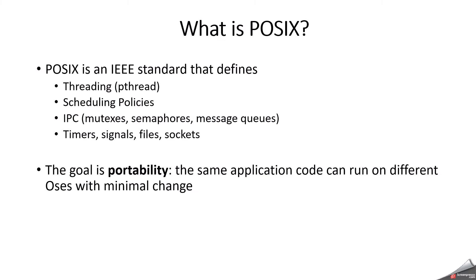POSIX is a UNIX-like operating system such as QNX or Linux that provides a standard POSIX API, and is used for high-performance ECUs like ADAS and infotainment. Autosar Adaptive applications run on top of such POSIX operating systems, while Classic Autosar uses an OSEK-based OS. The goal of POSIX is portability — the same application code can run on different OS with minimal change. POSIX is an IEEE standard that defines threading, scheduling policy, mutex, semaphore, message queue, timers, signals, files, and circuits.